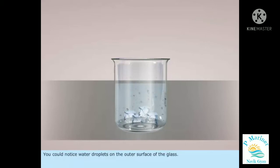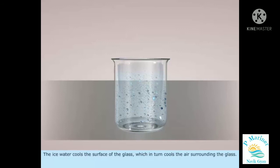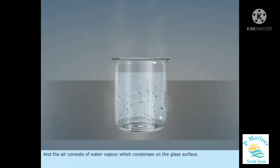You could notice water droplets on the outer surface of the glass. The ice water cools the surface of the glass, which in turn cools the air surrounding the glass. And the air consists of water vapor, which condenses on the glass surface.